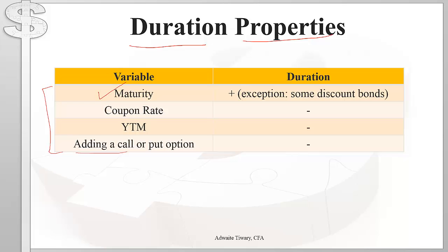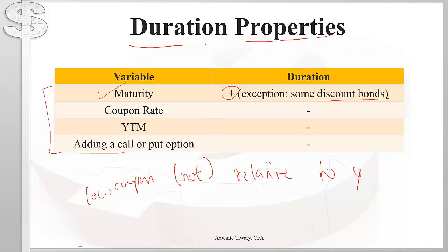Maturity is positively related to duration — increasing maturity also increases duration. The reason is that cash flows further in the future are more sensitive to interest rates and therefore carry greater interest rate risk, which increases duration. An exception is certain discount bonds with a low (but non-zero) coupon rate relative to yield and a long time to maturity — such bonds can have a negative relation between maturity and duration.